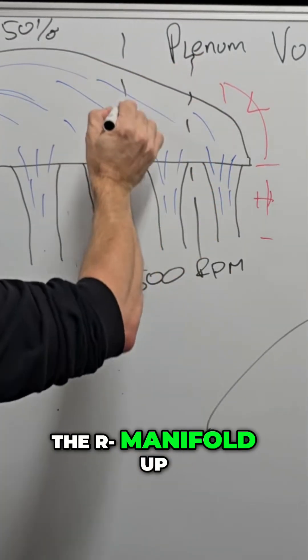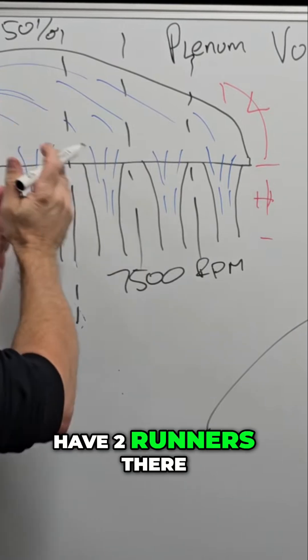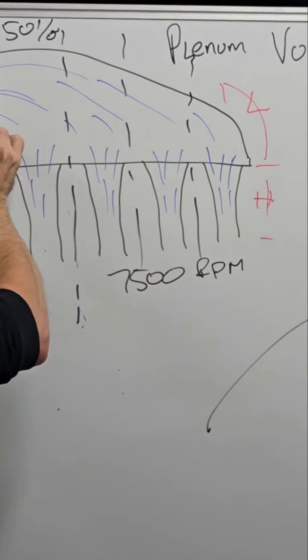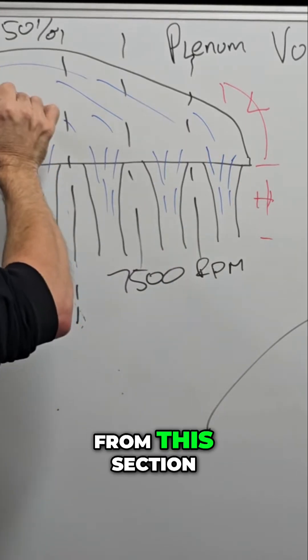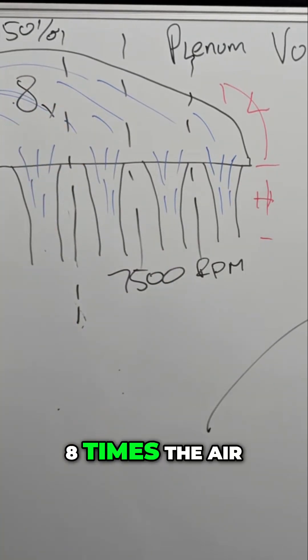Because if we break the manifold up into its sections, let's say this is a V8 and we have two runners there, two runners there, front, back, and so on. As this air moves across the plenum, from this section we need to supply eight fold, eight times the air.